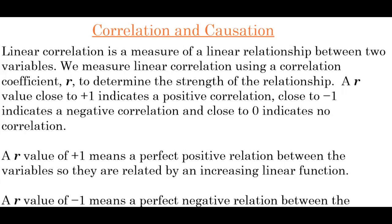Linear correlation is a measure of a linear relationship between two variables. We measure linear correlation using a correlation coefficient, which is r, to determine the strength of the relationship. Linear correlation and the correlation coefficient tell us how strong of a linear relationship is exhibited by the data.